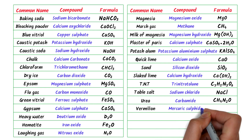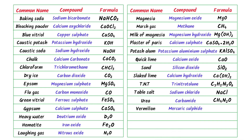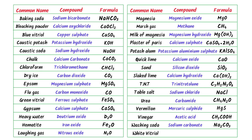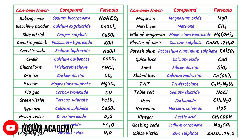The twenty-seventh is vermilion — it is mercuric sulfide and its chemical formula is HgS. The twenty-eighth is vinegar — it is acetic acid and its chemical formula is CH3COOH. The twenty-ninth is washing soda — it is sodium carbonate and its chemical formula is Na2CO3. The thirtieth is white vitriol — it is zinc sulfate and its chemical formula is ZnSO4·7H2O.